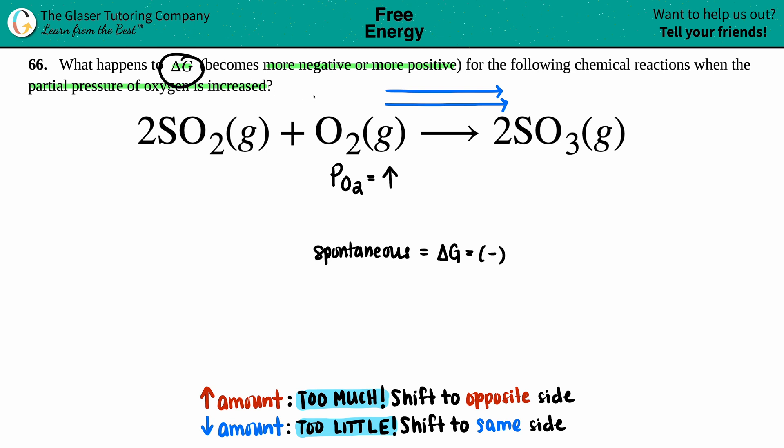Is the delta G going to become more negative or more positive? You're becoming more negative and heading to spontaneous land. That's the answer.